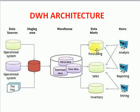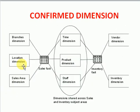So this type of common dimension — which means they can create it in one data mart and use it across multiple data marts — those tables are called conformed dimensions. If you look at this diagram, there are sales fact and inventory fact tables, and you can see a time dimension, product dimension, staff dimension, and location dimension. These are the common dimension tables used across all data marts.